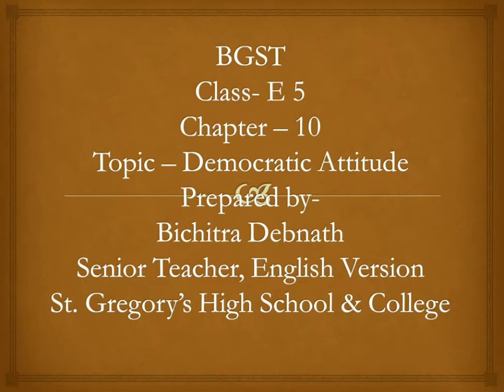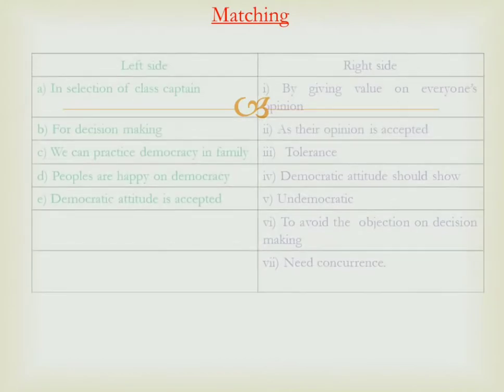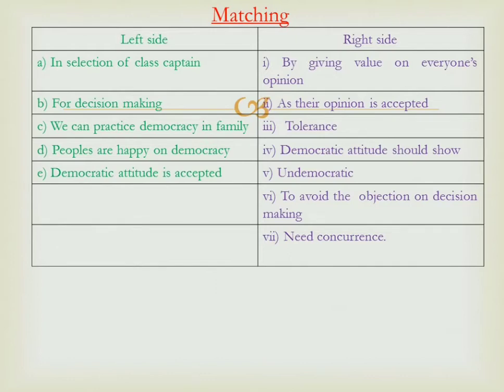I have tried to make matching from this chapter, chapter 10. Let us start the matching. Here comes the table. In this matching there are two sides — one is the left side. It contains 5 statement sentences which will appropriately match with the right side, and on the right side there are 7 statements. So you can realize 5 statements should match with 5 statements on the right side, but 2 are false. So you have to realize which one should match with which.